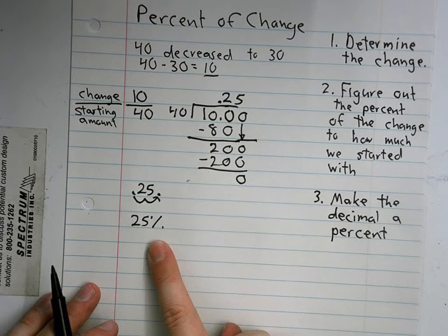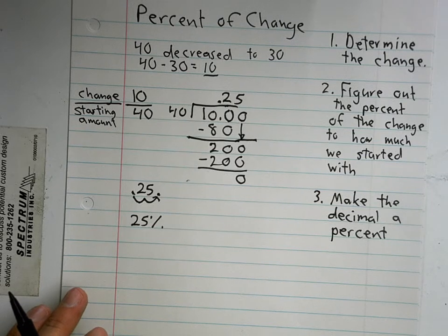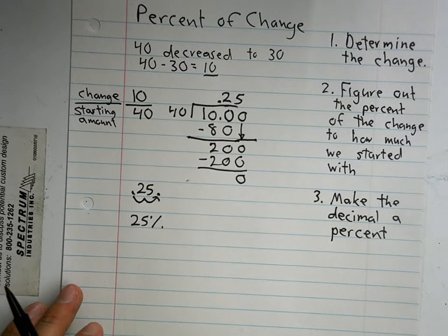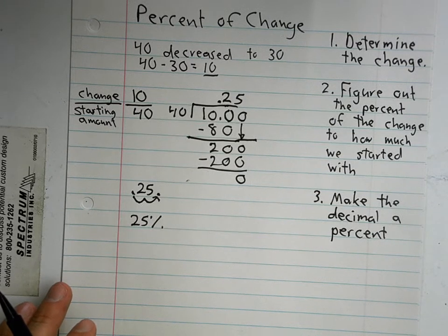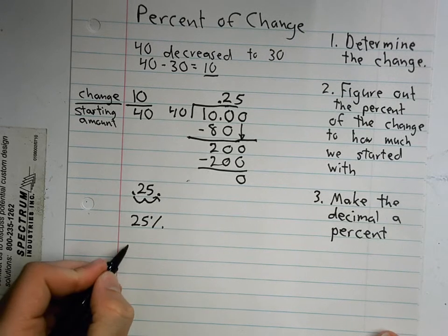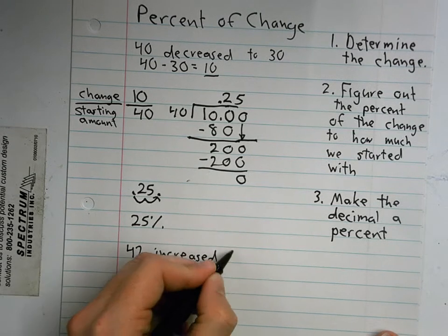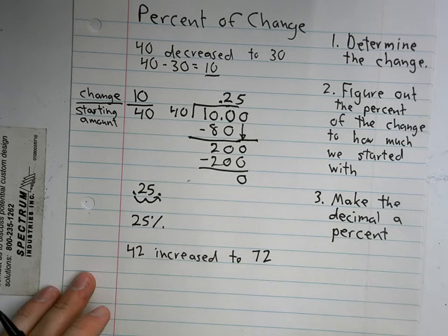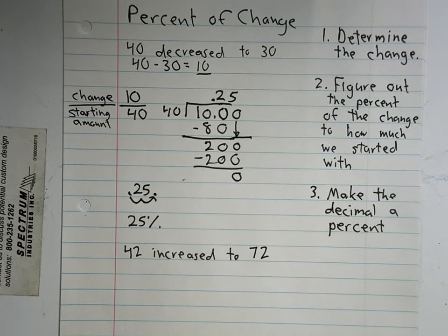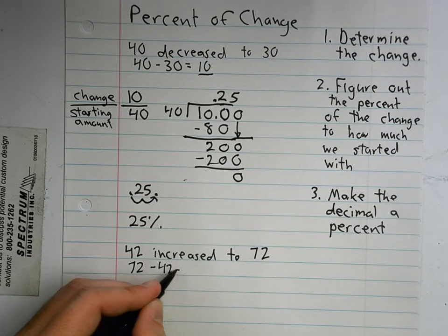Now there's one more type of problem you'll probably see when something increases. We'll say 42 increased to 72. How much did this change? 30. 30, because remember we do our subtraction sentence. 72 minus 42 equals 30. We use subtraction to figure out how much it changed.